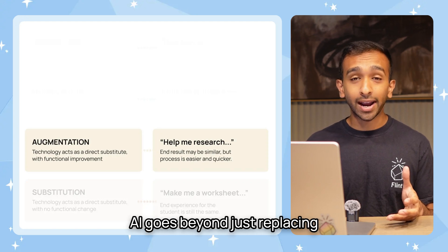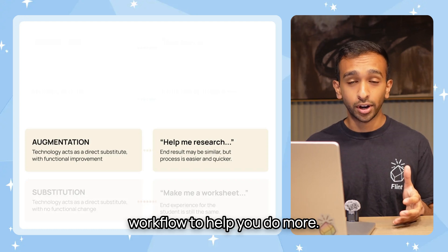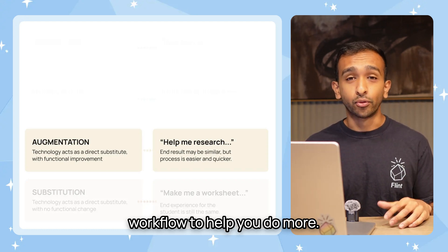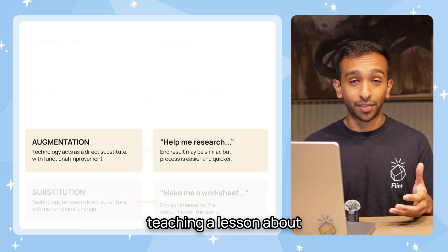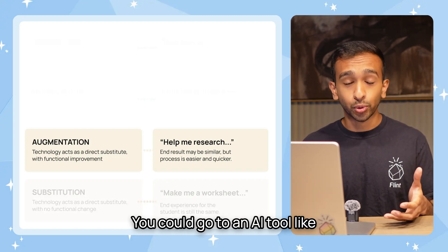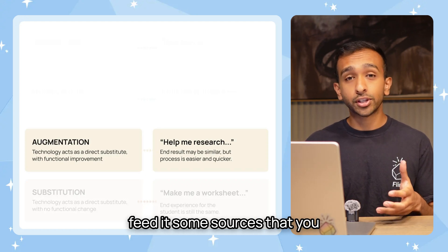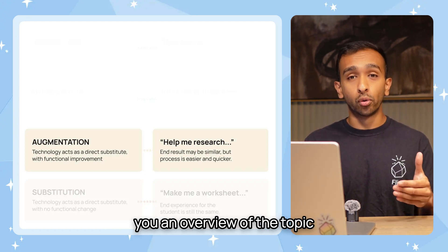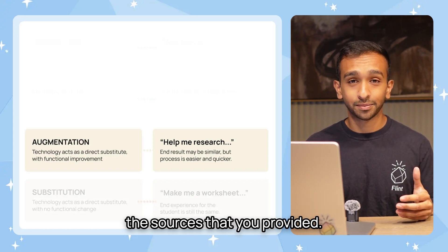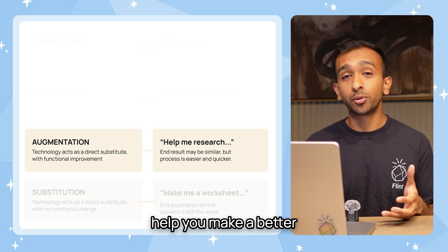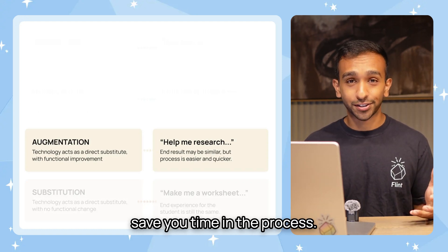Next is augmentation, where AI goes beyond just replacing tasks and augments your workflow to help you do more. For example, let's say you're researching a topic on the internet to prepare for teaching a lesson the next day. You could go to an AI tool like Perplexity, ChatGPT, or Flint, feed it some sources you found online, and have it give you an overview of the topic with detailed summaries citing the sources you provided. Using AI in that way might help you make a better lesson plan, and it'll save you time in the process.